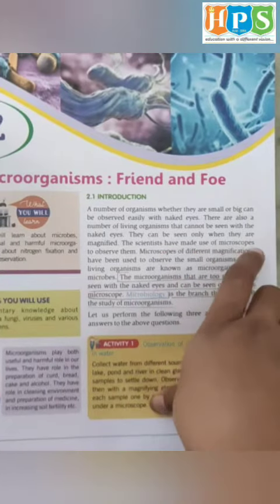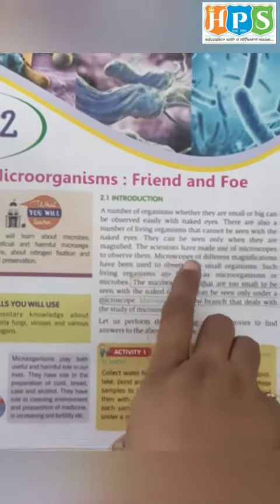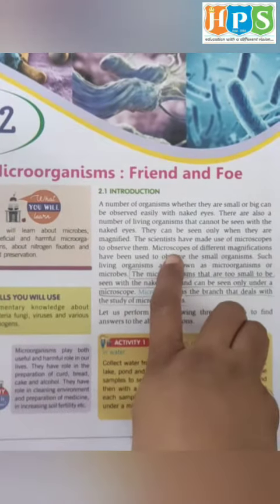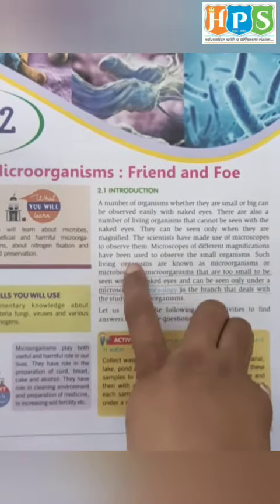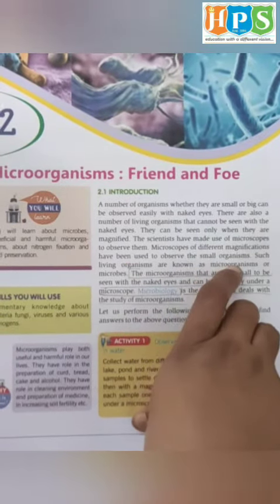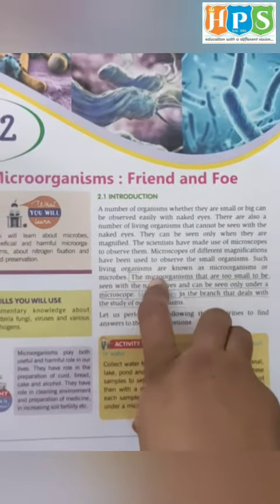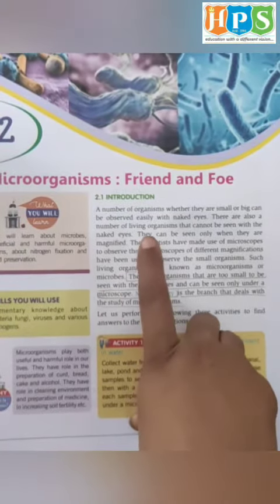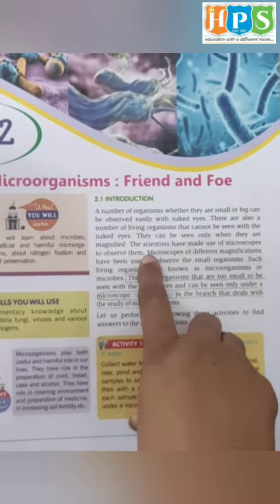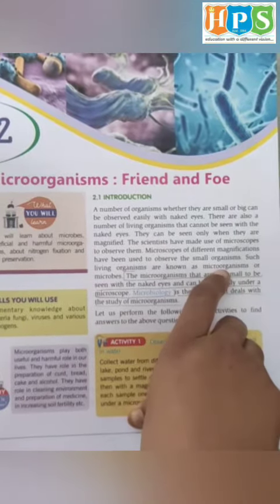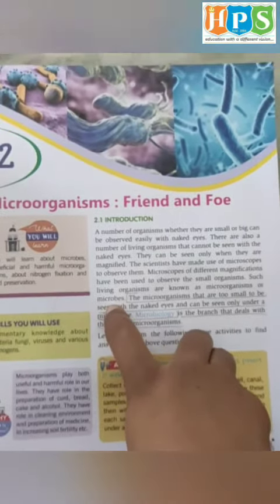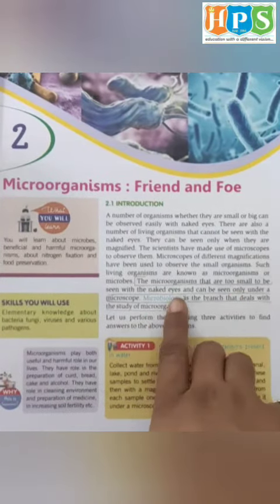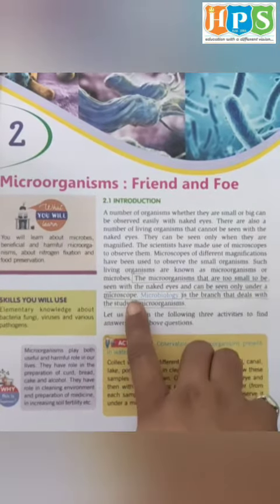The scientists have made use of microscopes to observe them. Microscopes banaye jis mein hum in ko dekh sakte hain. Microscopes of different magnifications have been used to observe small organisms. Such living organisms are known as microorganisms or microbes. Aise organisms jo hamaari aankhon se nahi dikhai dete, unhe microorganisms ya microbes kehte hain.